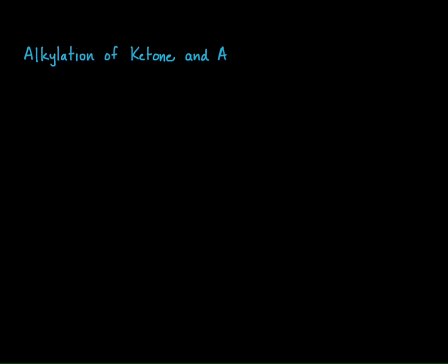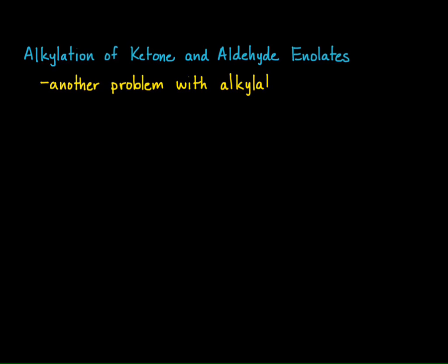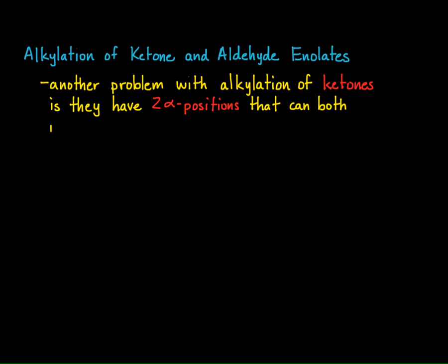Let's take a look at alkylation of ketones and aldehyde enolates. When we start thinking about ketones themselves, we actually have another problem that arises: with alkylation of ketones, they have two possible alpha positions that can both produce enolates. And so if you don't have a symmetrical ketone, you run into quite a bit of a problem.